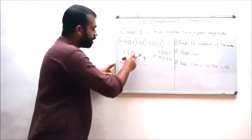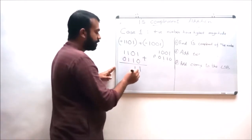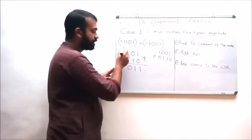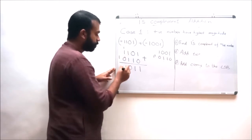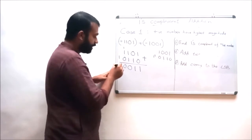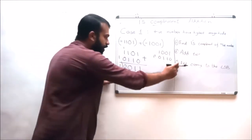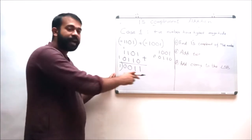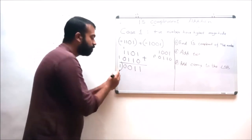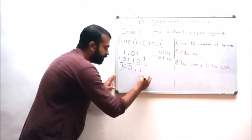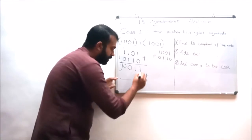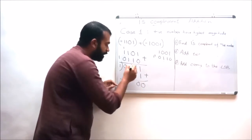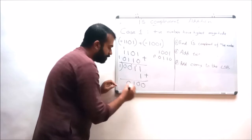While adding: 1 plus 0 results in 1; 0 plus 1 results in 1; 1 plus 1 results in 0 with a carry of 1; and 1 plus 1 results in 0 with a carry of 1; and 0 plus 0 results in 0, with that carry passed over. As per the third rule, we get a round-around carry. This round-around carry should be added with the LSB position. So this 1 is added to the LSB: 1 plus 1 results in 0 with a carry, and so on.